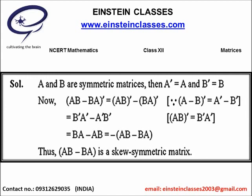Now let us discuss the solution in detail. First, take the transpose of AB minus BA. The transpose of AB minus BA will be equal to the transpose of matrix AB minus the transpose of matrix BA, because we have the theorem: the transpose of matrix P minus Q equals the transpose of P minus the transpose of Q.